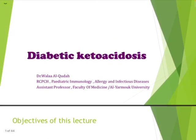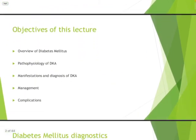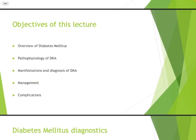We'll start with diabetic ketoacidosis in the pediatric age group. You will notice when you move to your internal medicine rotation that management of DKA in pediatrics is different from management of DKA in adults. There are a few things you should never do in pediatrics but can be done in the management of DKA in the adult age group. The objectives of today's lecture are to give you an overview of diabetes mellitus in general, the pathophysiology of diabetic ketoacidosis, how they manifest and how we diagnose them, how to manage, and what complications we need to do our best not to face.